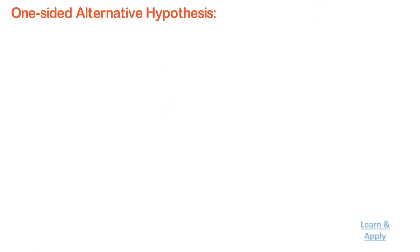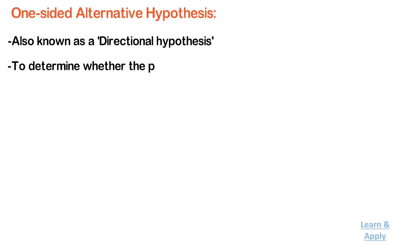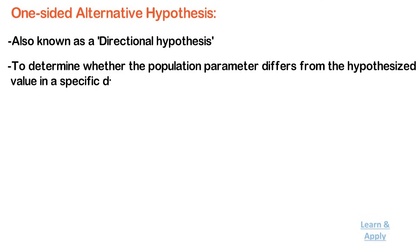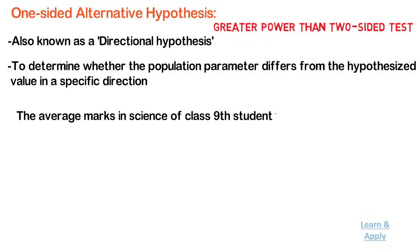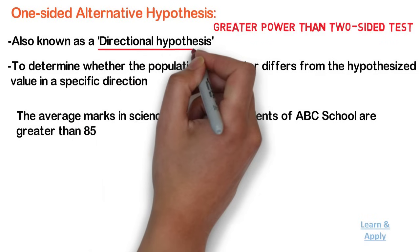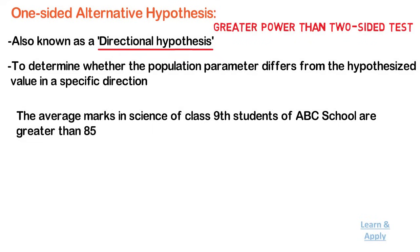One-sided alternative hypothesis: use a one-sided alternative hypothesis, also known as a directional hypothesis, to determine whether the population parameter differs from the hypothesized value in a specific direction. You can specify the direction to be either greater than or less than the hypothesized value. A one-sided test has greater power than a two-sided test but cannot detect whether the population parameter differs in the opposite direction. For example, if you want to see whether the average marks in science of class 9 students of ABC school are greater than 85, a one-sided alternative hypothesis is used: H0: μ = 85 versus H1: μ > 85.